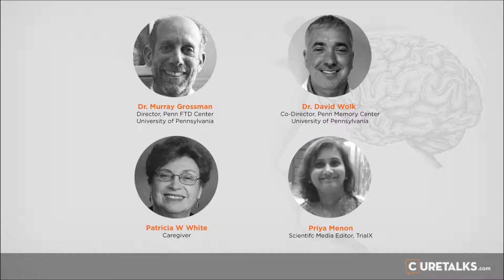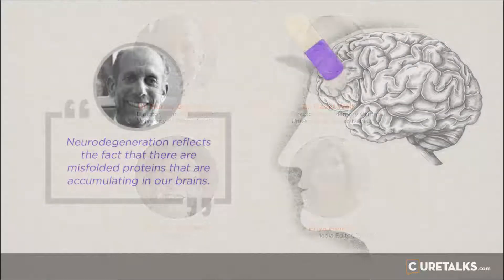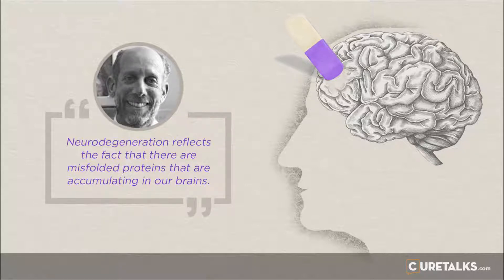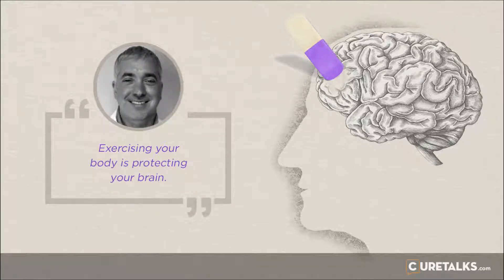Everything Dr. Grossman described is something we consider as well when seeing patients with Alzheimer's, in part because we're trying to differentiate Alzheimer's disease from some of the same conditions. Another diagnostic tool, particularly when seeing patients with much more mild symptoms — something we sometimes refer to as mild cognitive impairment — is following patients over time and measuring whether they show any evidence of progression. Sometimes we don't have a definitive answer the first time we see a patient, but the evolution of their condition over time can help us as well.